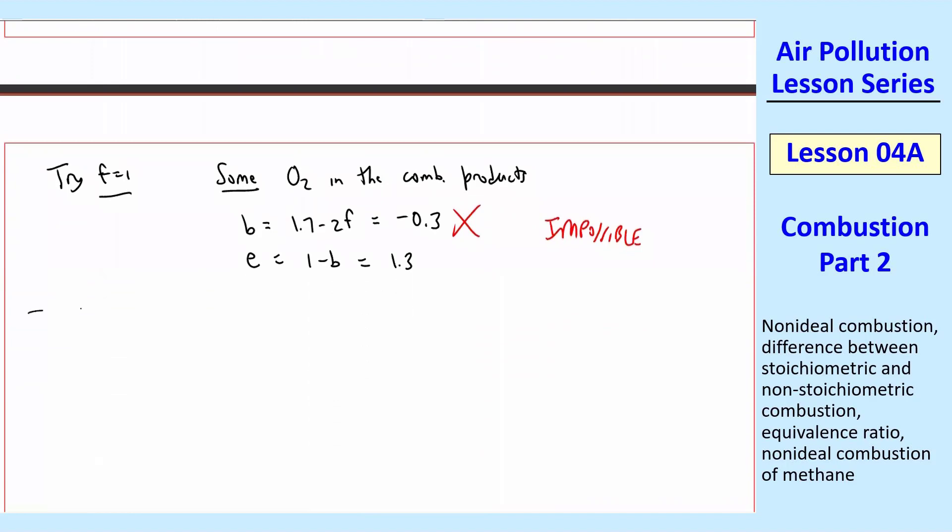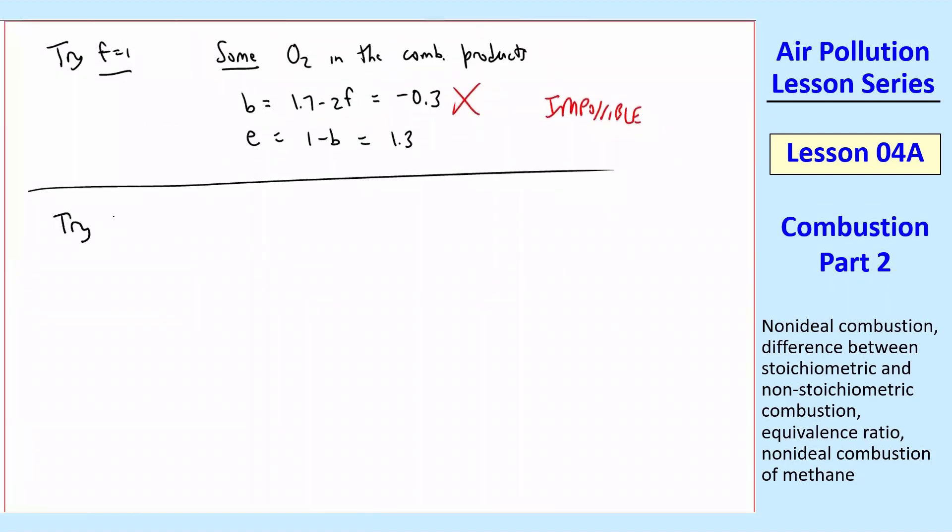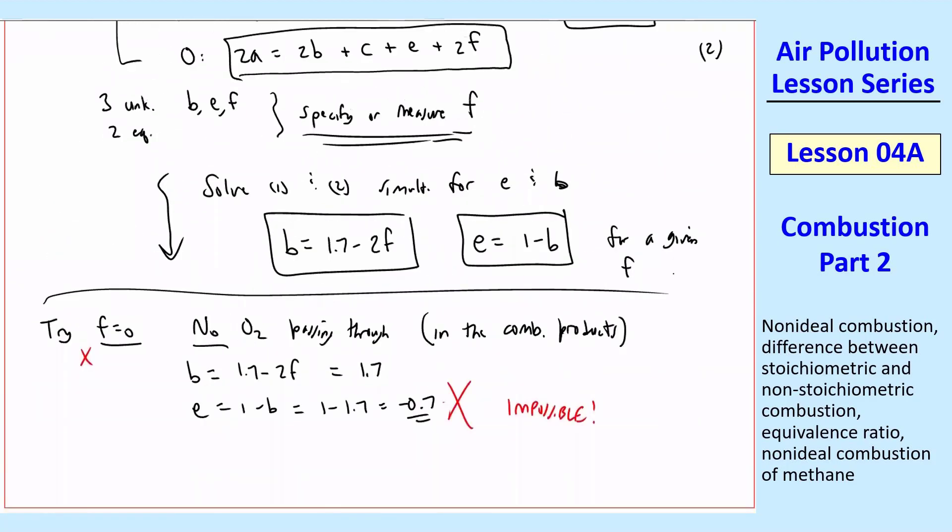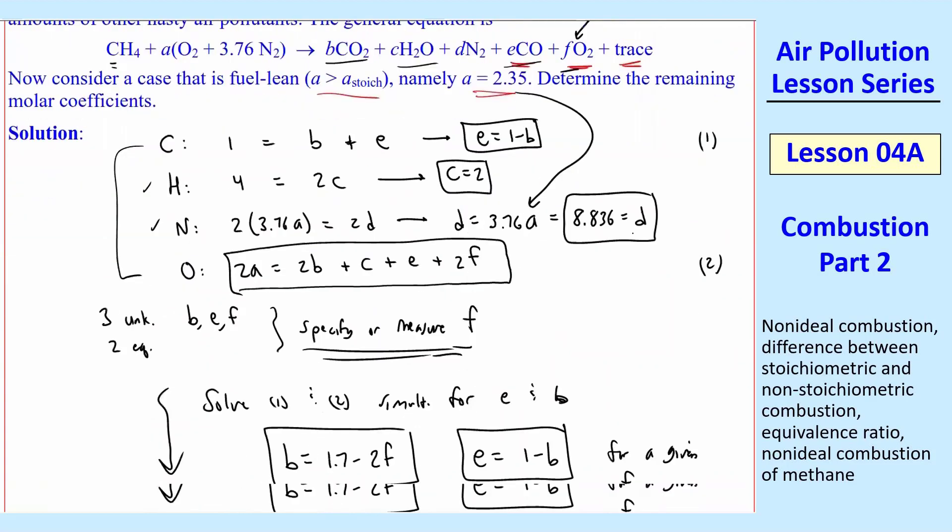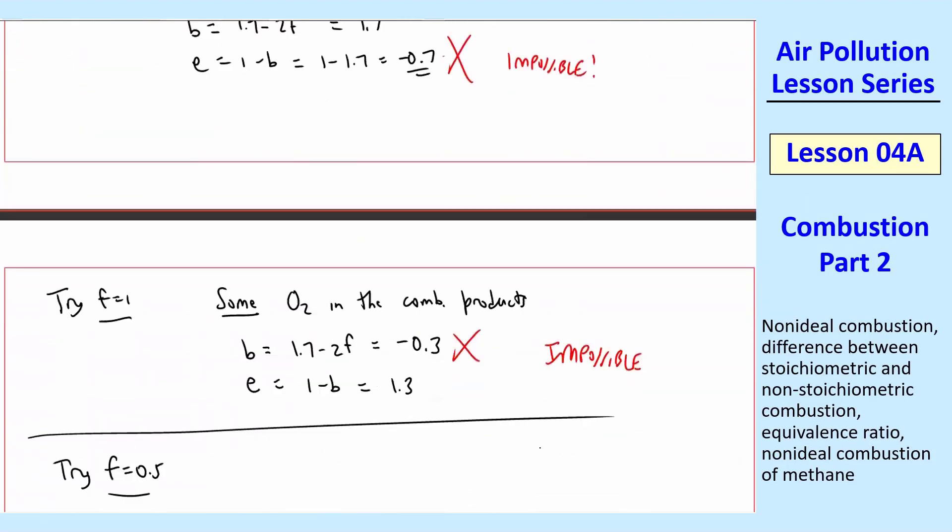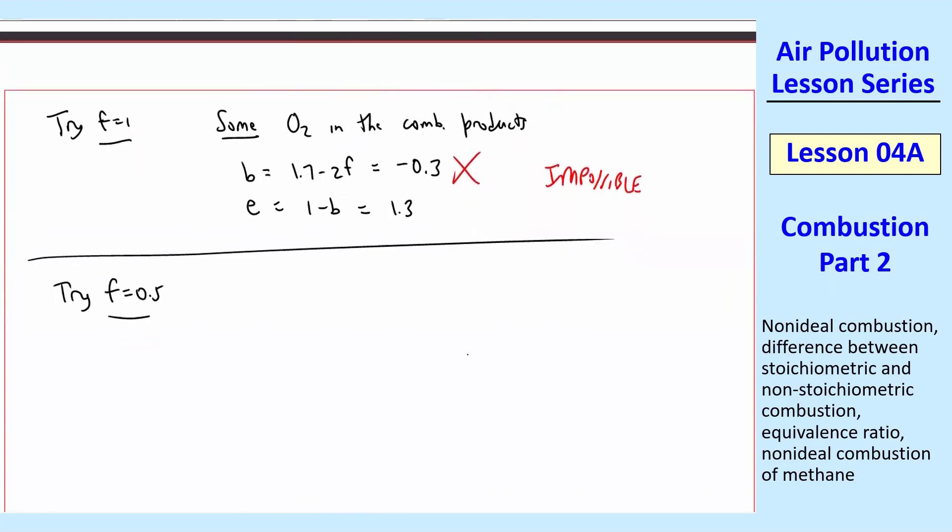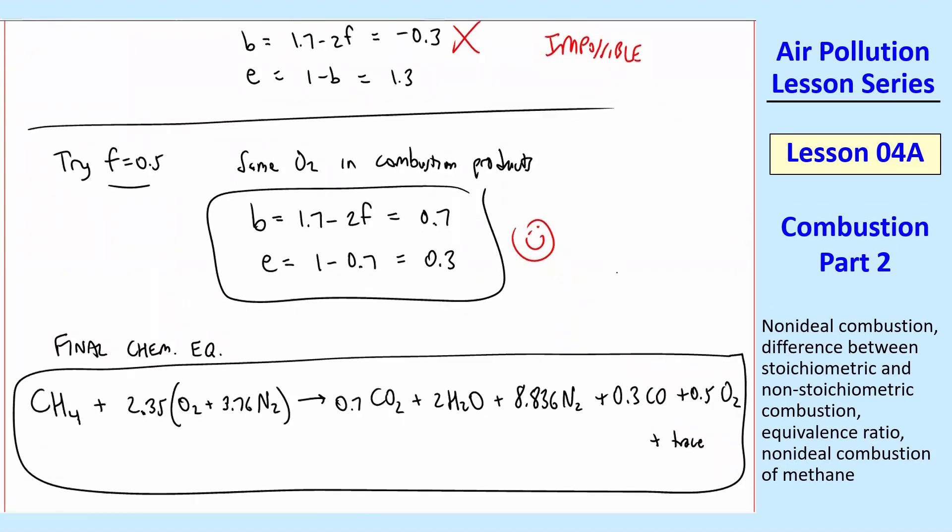So we see that not every F works here, but you can find some sweet spots where you can get an F that works. So for example, let's try F equals 0.5. When I say try, let's suppose in an actual experiment, you have a device that measures how much oxygen is in your combustion product. So you actually can measure this F up here, and then you can calculate what everything else is after that. Let's just try F equals 0.5 and see if that works. So yay, this one works. We get positive values for both B and E. So this is my final equation.